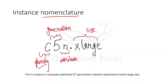The first letter denotes the family. We have different types of families like general purpose, compute optimized, storage optimized, and memory optimized — such families of EC2 instances exist for different use cases. This particular instance belongs to the compute family.